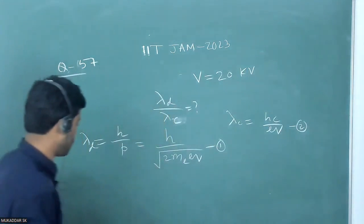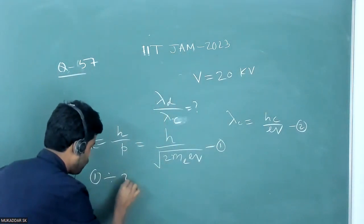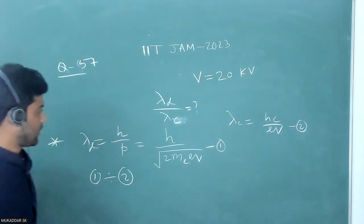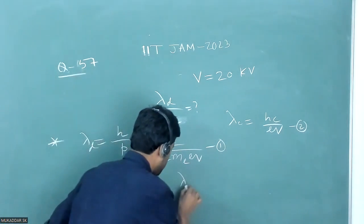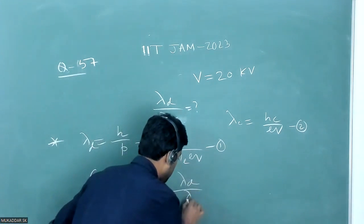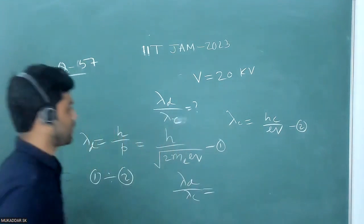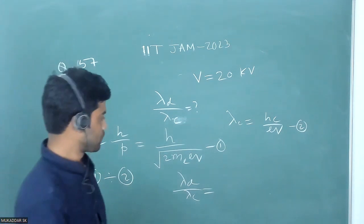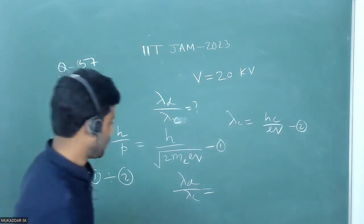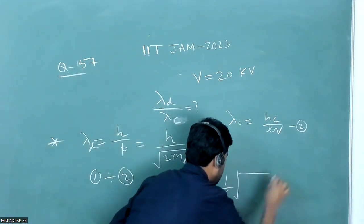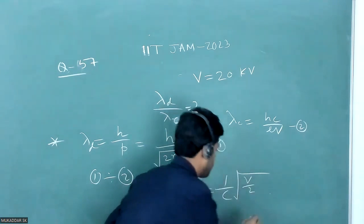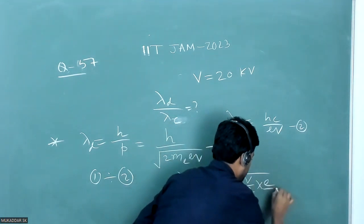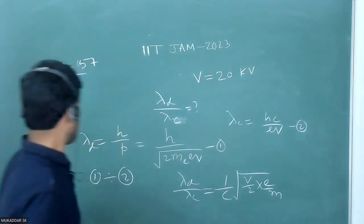If I divide equation one by equation two, I get the ratio of de Broglie wavelength of the electron to the minimum wavelength of X-ray. That comes out to be (1/c) times the square root of (eV / (2·m_e)).